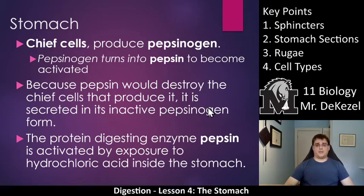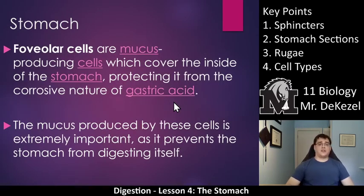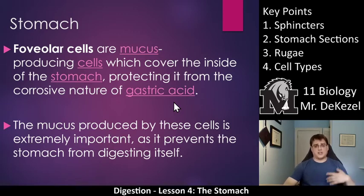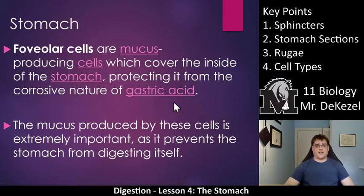You might be thinking — once pepsinogen is turned into pepsin, why doesn't it eat away at your stomach? That's because of the mucus secreted by foveolar cells. Foveolar cells are mucus-producing cells which cover the inside of the stomach, protecting it from the corrosive nature of gastric acid. Because you have foveolar cells secreting mucus you're able to use HCL, and because you have HCL you can activate pepsinogen into pepsin. The mucus is extremely important as it prevents the stomach from digesting itself — exactly what would happen if chief cells tried to produce pepsin in its active form directly. Go back and listen to this again as it is a very complex but very important part of the lecture.